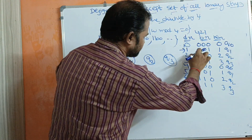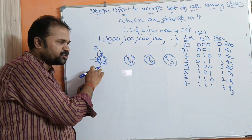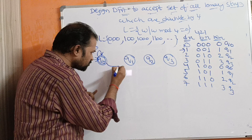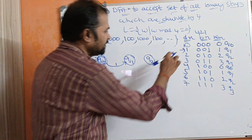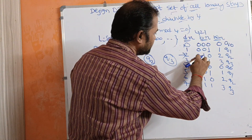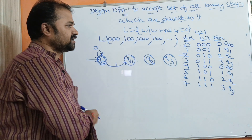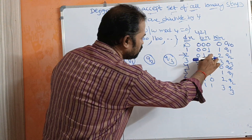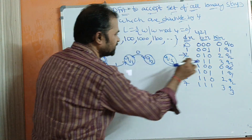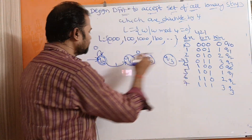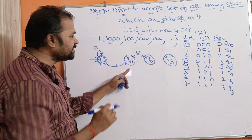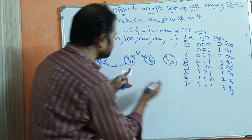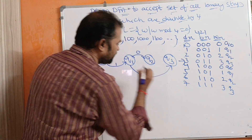For the binary number 001: Q0 on 0 stays Q0, Q0 on 0 stays Q0, and Q0 on 1 goes to Q1. For 010: Q0 on 0 stays Q0, Q0 on 1 goes to Q1, and Q1 on 0 goes to Q2. For 011: Q0 on 0 stays Q0, Q0 on 1 goes to Q1, and Q1 on 1 goes to Q3.